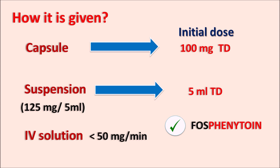Side effects include vertigo, nausea, nystagmus, headache, slurred speech, gum hyperplasia, hirsutism, and megaloblastic anemia. The drug is given at 100 mg thrice daily in capsule form, and as a suspension at 5 ml thrice daily at 125 mg per 5 ml. IV administration should be slow due to infusion site reactions; fosphenytoin, its prodrug with greater water solubility, has fewer infusion site reactions. Hope you enjoyed this video — please subscribe, share, and post your comments.